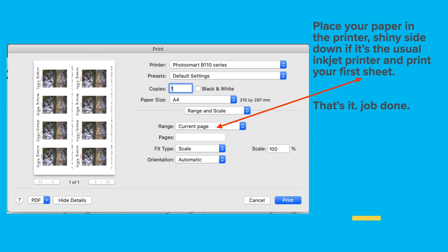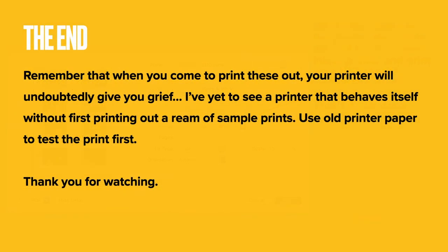If you've got photo paper and an inkjet printer, you'll come out with a really nice image — lovely labels that go well on the bottle. Remember that when you come to print, your printer will undoubtedly give you grief. I've yet to see one go right first time or see a printer that behaves itself, and you end up using a ream of sample prints. Don't use your expensive label paper — use old regular printer paper for test prints.